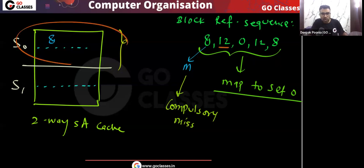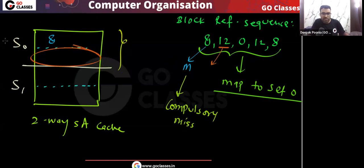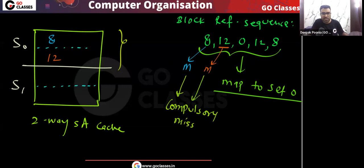What about block 12? This will also map to set number zero. There is already a space here, so we place 12 in the cache. This is also a miss — specifically a compulsory miss — because this is the very first access to block number 12.